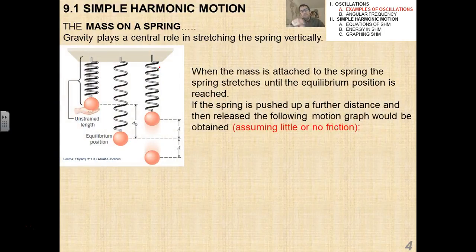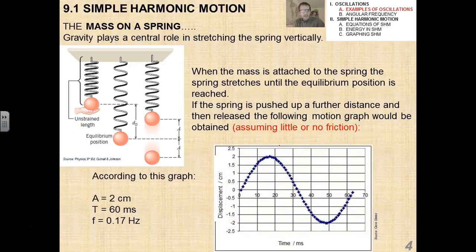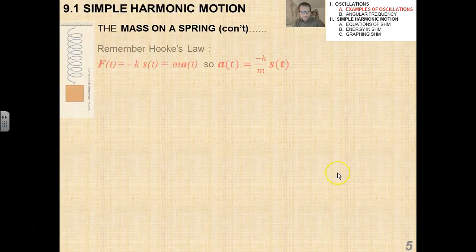When the mass is attached to the spring, the spring stretches until a new equilibrium position is reached. If the spring is pushed up further a distance and then released, the following motion graph would be obtained, right? And I think we've gone through this slide before. In this particular case, A is 2 centimeters, the period is 60 milliseconds, and the frequency is 0.17 hertz. You should be able to ascertain all of that from a basic displacement-time motion graph.